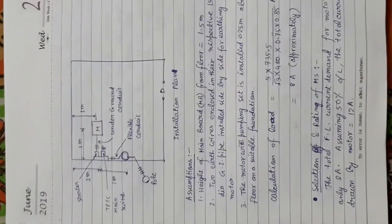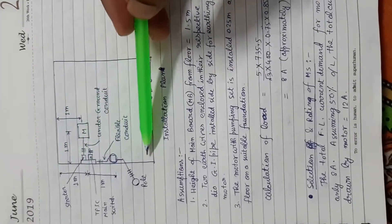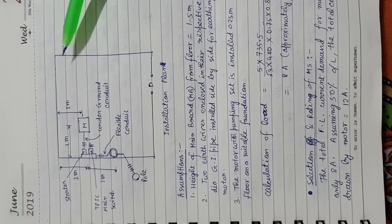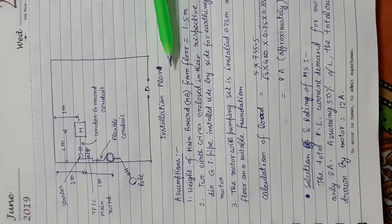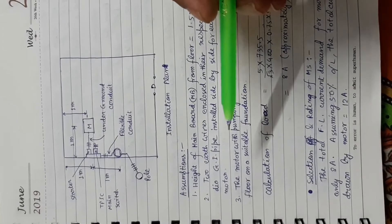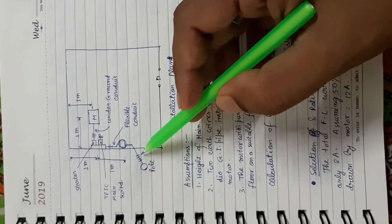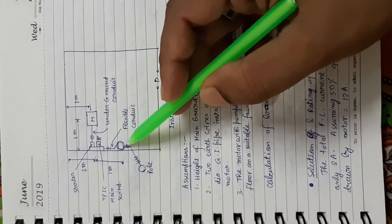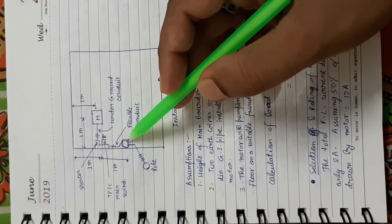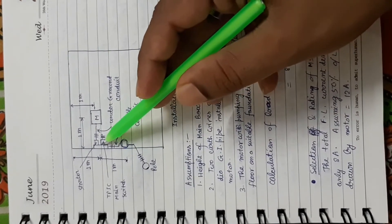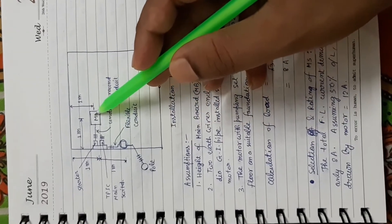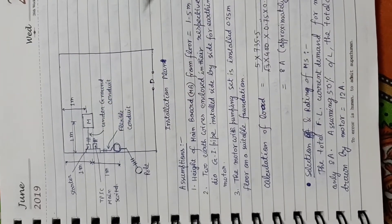Drawing the installation plan: when using this pipe, the main switch is a TPIC main switch — triple pole iron-clad main switch. This shows the cable to the motor and the overall installation plan.